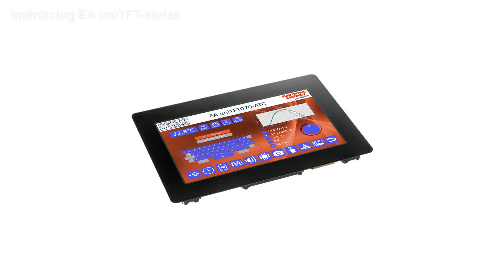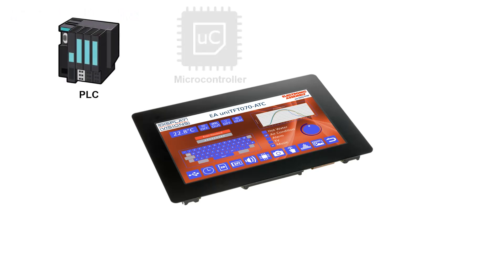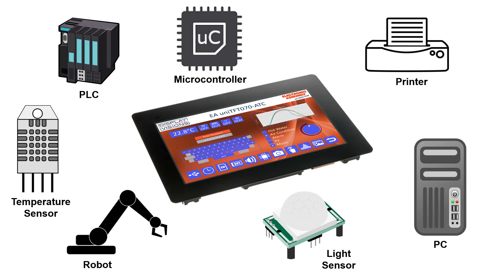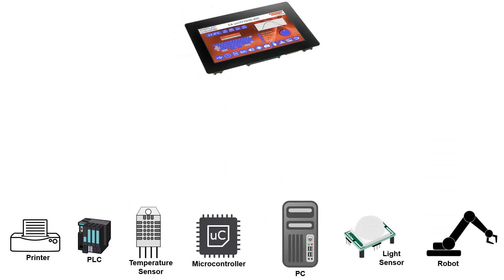I want to explain the connection by examples like PLC, microcontrollers, sensors, and actors. The UniTFT has basically two functions on its serial interface: it can act as slave or master. It's necessary to clarify and decide which of the two types of connection is more convenient.